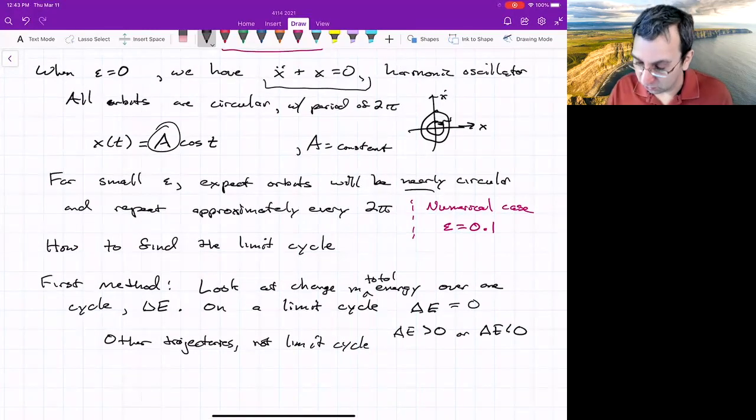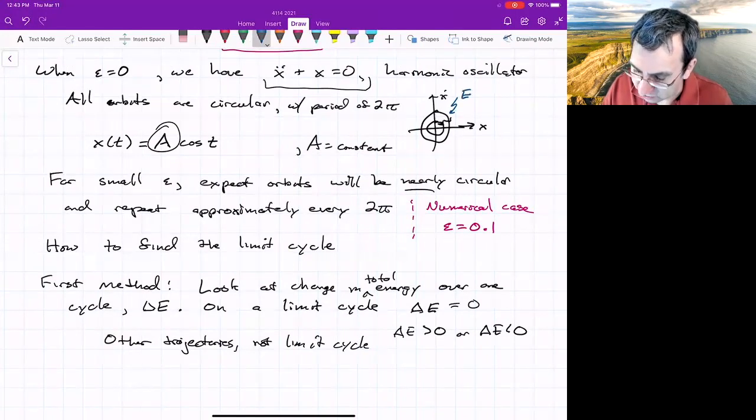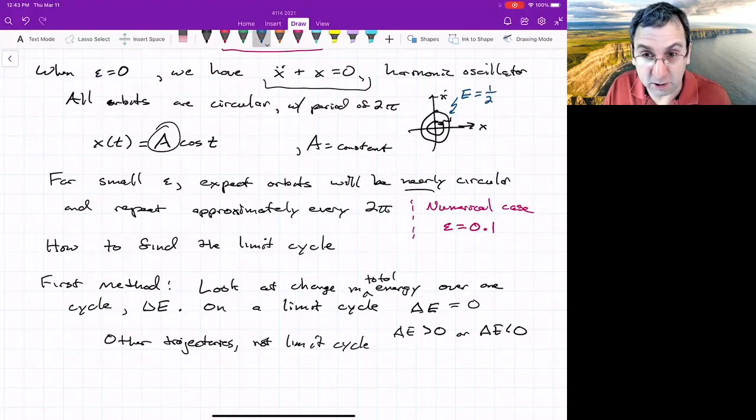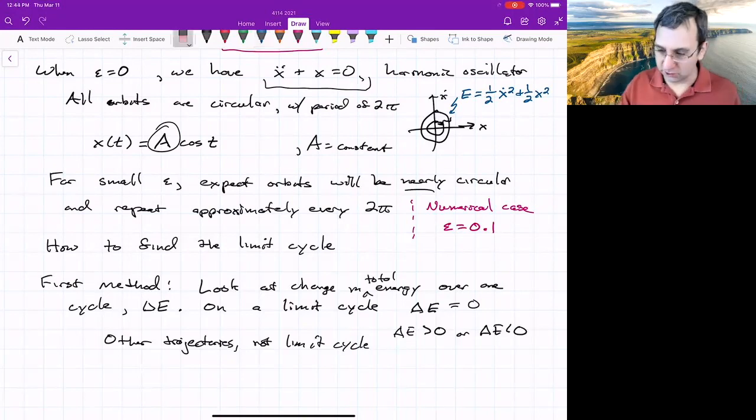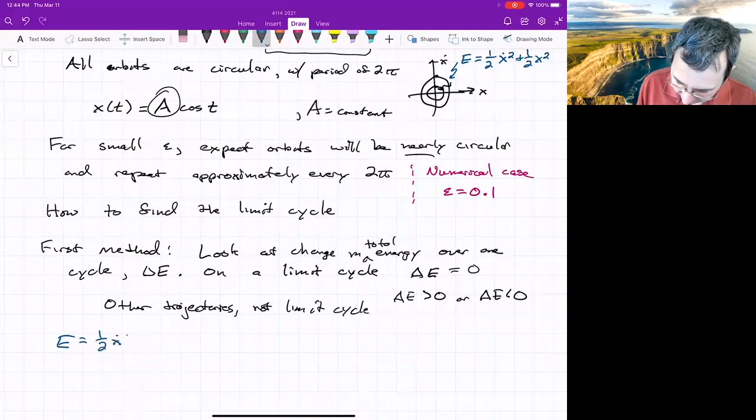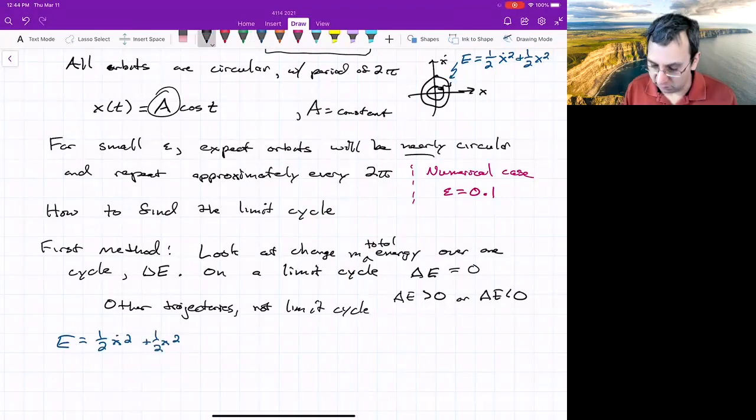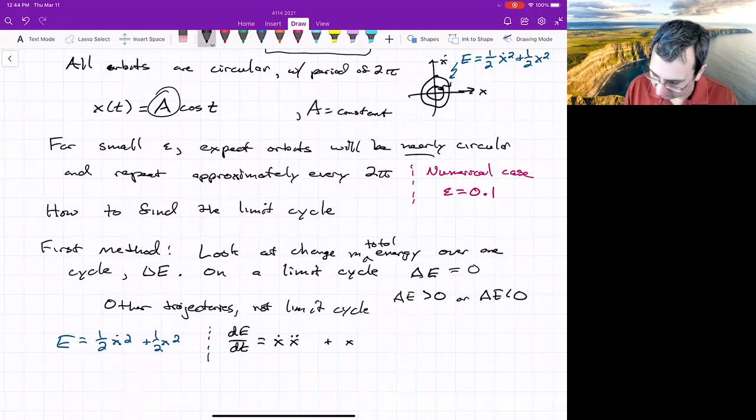The energy for the harmonic oscillator, all of these curves have an energy value, which is equal to one half x dot squared plus one half x squared. That energy is constant along those circles. So we'll use E equals one half x dot squared plus one half x squared, and then take the time derivative. So dE/dt is equal to x dot times x double dot plus x times x dot. We can pull out an overall x dot, and we have x double dot plus x, which is equal to negative epsilon x dot squared (x squared minus 1).